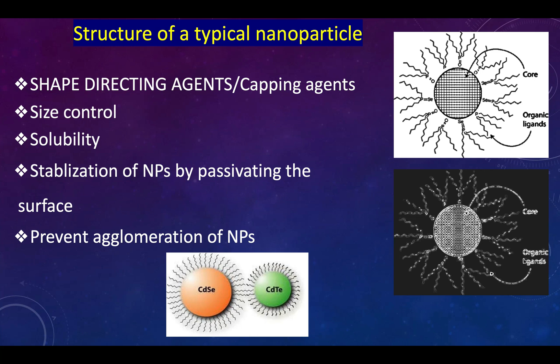Shape-directing agents do not only control the shape, but they also control the size and dispersion of the nanoparticle. Note: nanoparticles are always dispersed, not dissolved — use 'dispersion' rather than 'solubility.' These agents attach to the high-energy surface areas of the nanoparticle, causing the surface energy to decrease and thus stabilizing the nanoparticle. They also prevent fusion, which would otherwise lead to agglomeration of the nanoparticles.